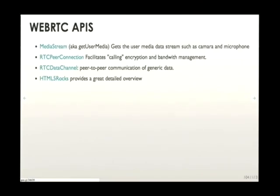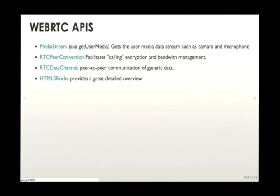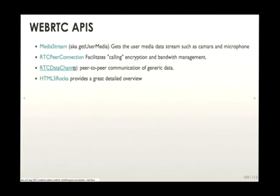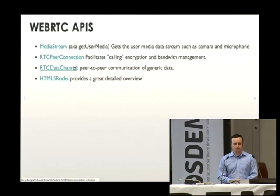WebRTC is important to keep in mind as a set of APIs, not just one. The media stream or getUserMedia API enables getting at the media stream itself — accessing your camera and microphone. The RTC peer connection facilitates calling, encryption, and bandwidth management that opens up the connection between two peers. Then the RTC data channel enables message exchange between peers — sending JSON for things like collaborative whiteboard or basic chat, but also data blobs sent between peers.